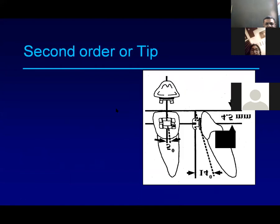Second order bends address mesiodistal angulation. If you placed a bracket not exactly on the long axis of the tooth and have already started treatment, you cannot easily debond the bracket. Instead, in the second stage, you give a second order bend to correct the mesiodistal angulation — for example, if the tooth is tilted distally, you add a second order bend to correct it.